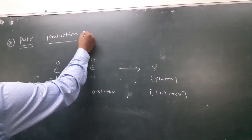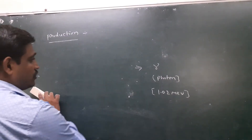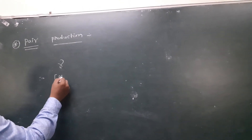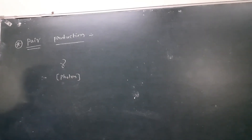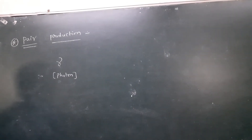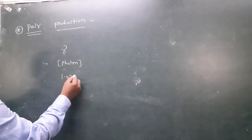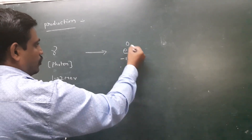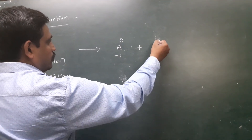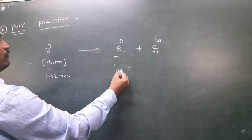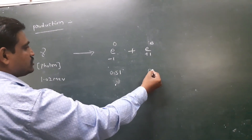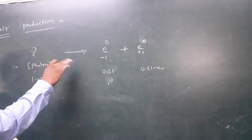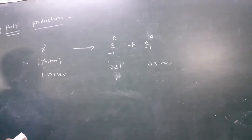Pair Production is the reverse process of Pair Annihilation. In Pair Production, a gamma ray photon — which is energy, not a particle — with energy of 1.02 MeV produces an electron and a positron. The 1.02 MeV is split into 0.51 MeV for the electron and 0.51 MeV for the positron. This is called Pair Production.